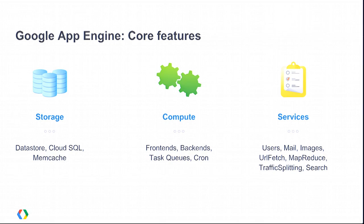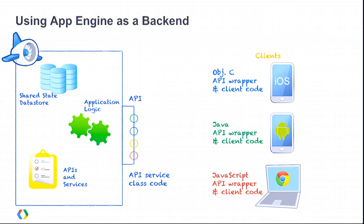So we've taken the lightning tour of App Engine — let's use that for our backend. Using App Engine, we'll store shared state in the Datastore, write all application logic in an App Engine app, and use any of those APIs and services as well. Now we're taking advantage of App Engine's scaling so we don't have to worry about managing all of that ourselves, and we're also getting things done more quickly because we didn't have to do all that setup and configuration hassle at the beginning.